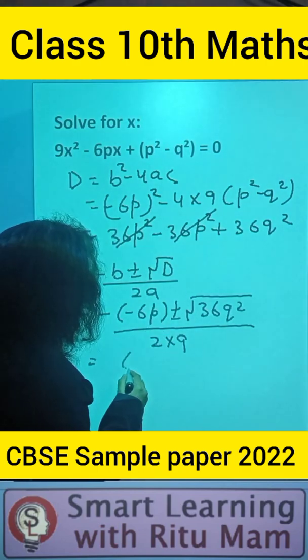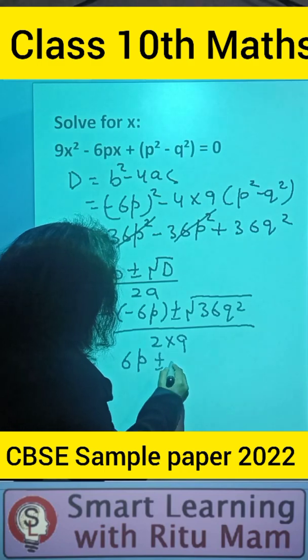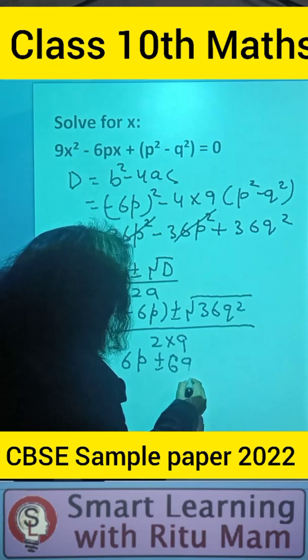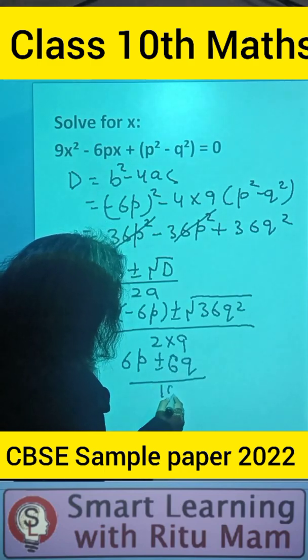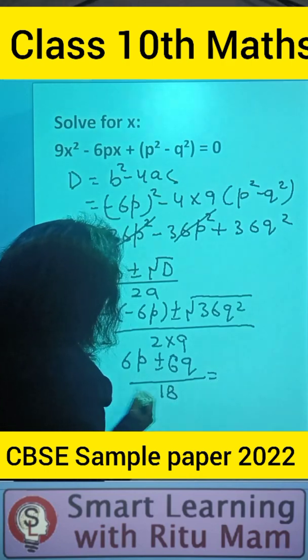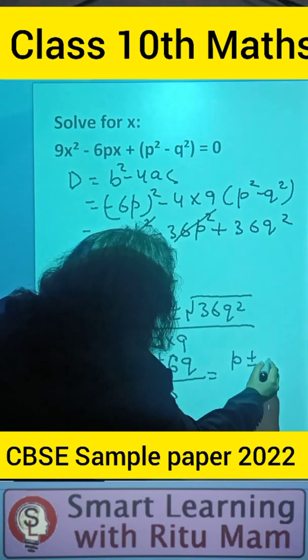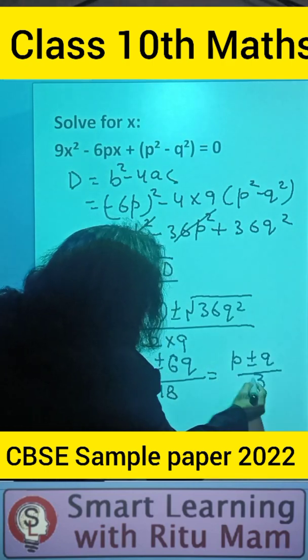Solving further, we get 6p ± 6q / 18. Taking 6 common, we get (p ± q) / 3.